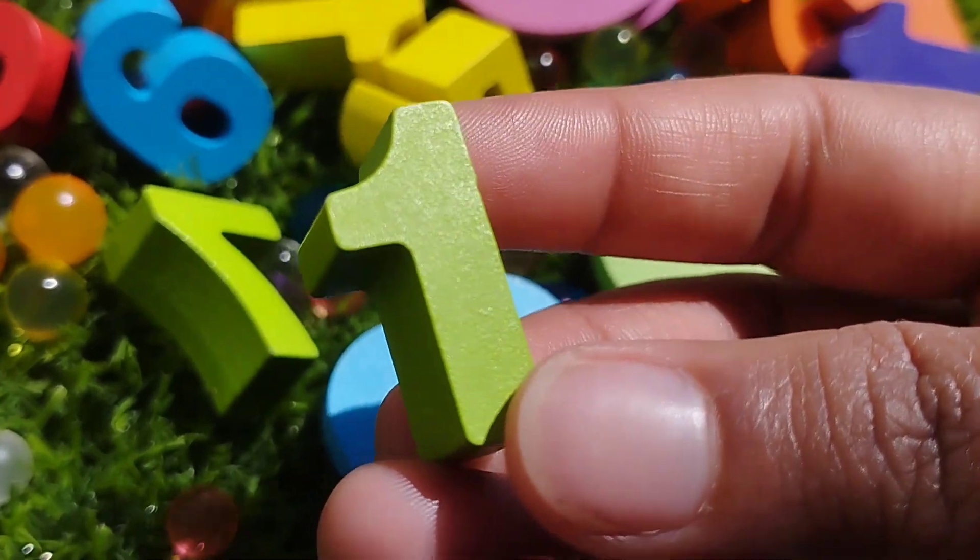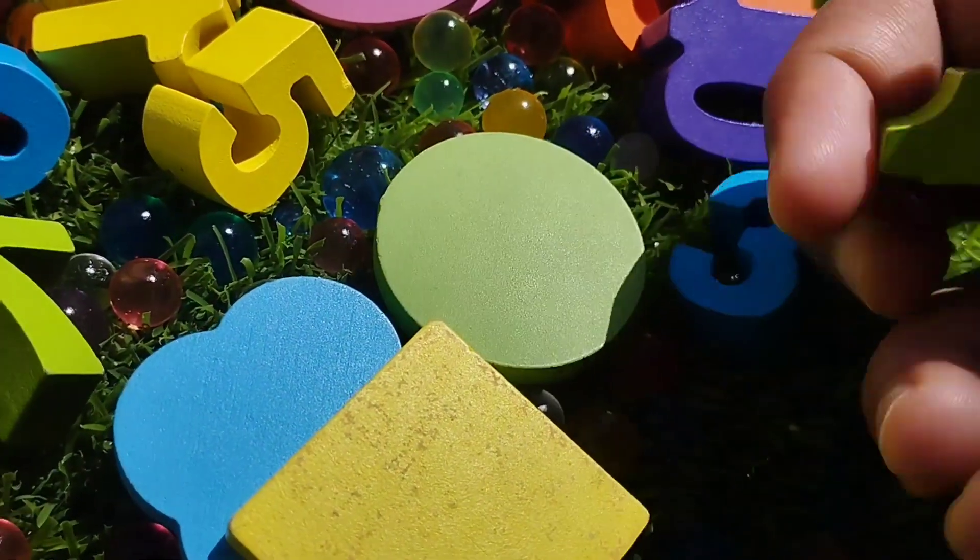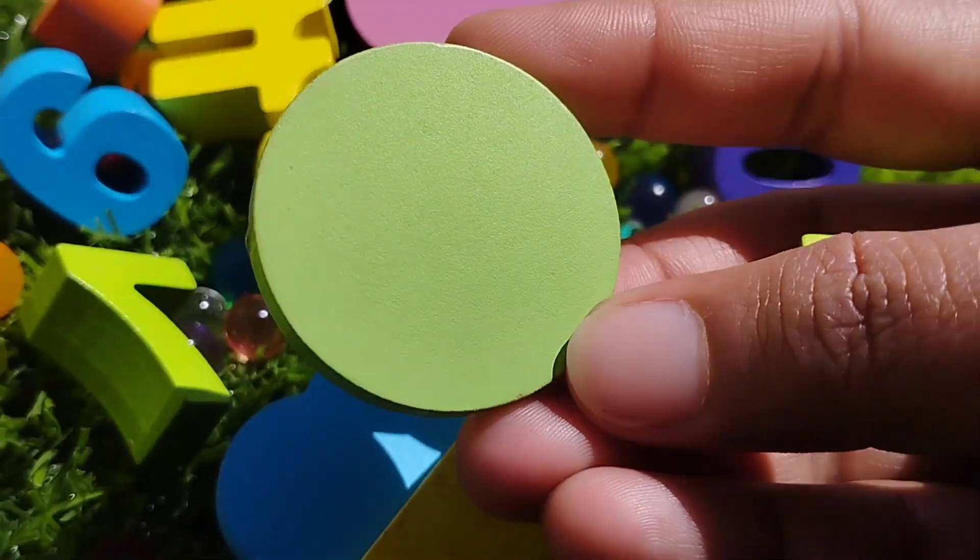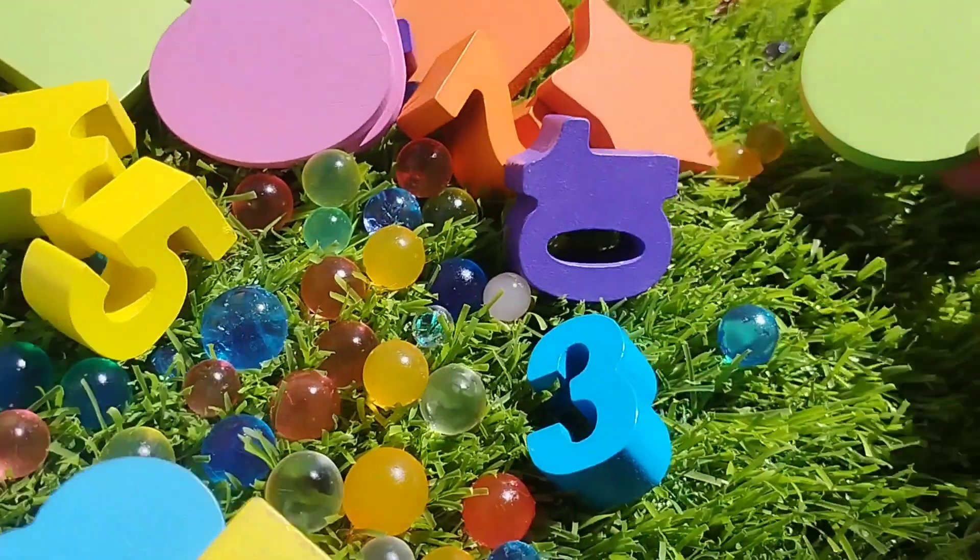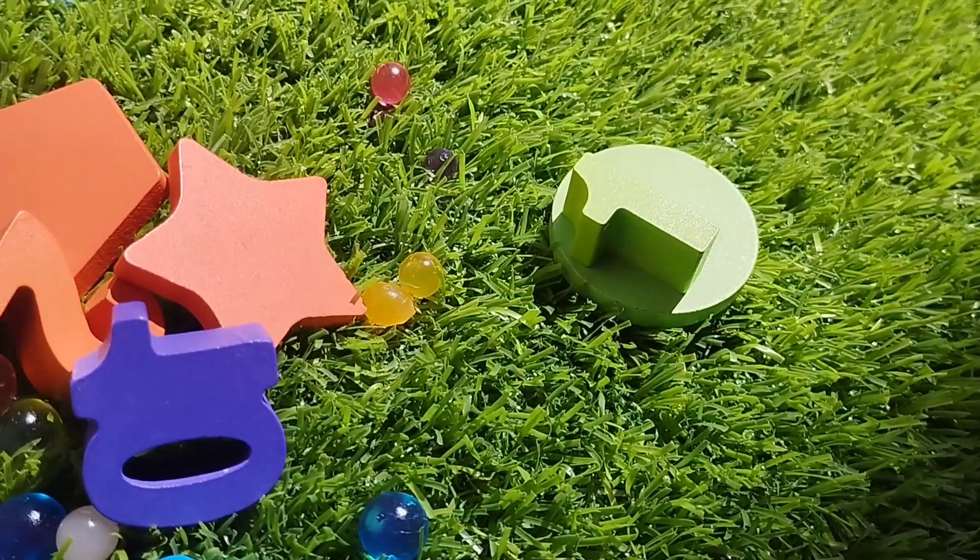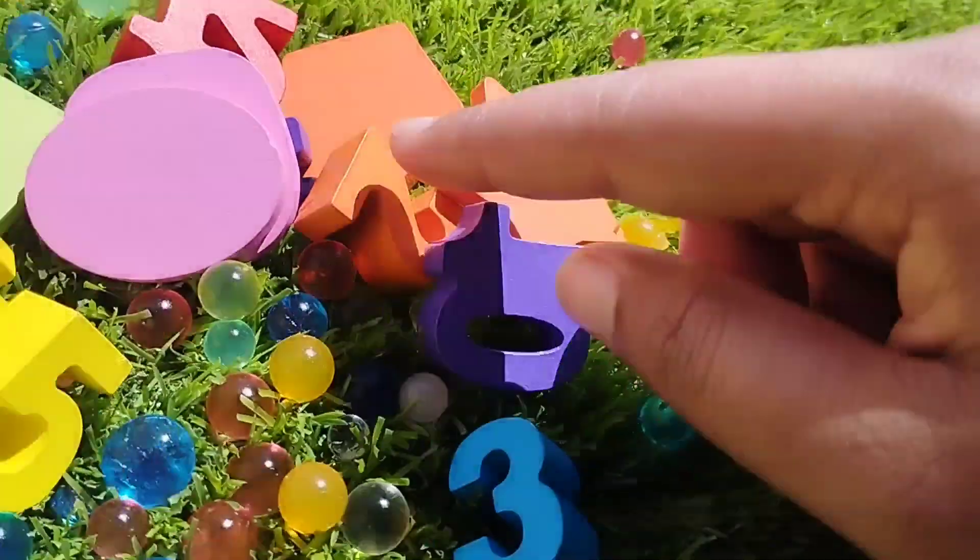The first number is one. One is green. Where is green? This is a circle shape. It's green. This is number one and this circle shape.